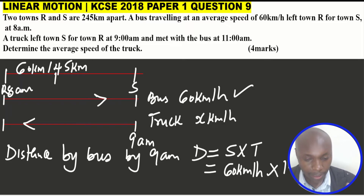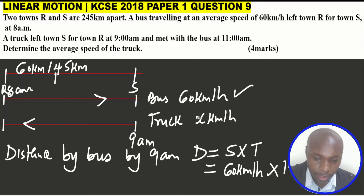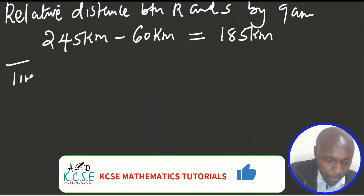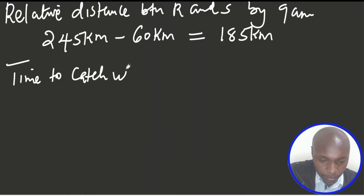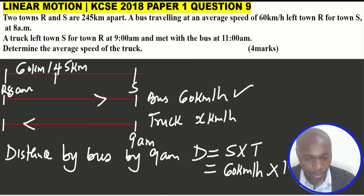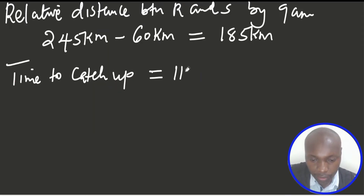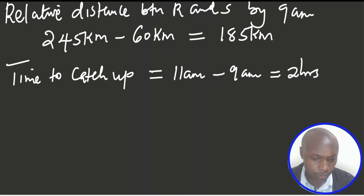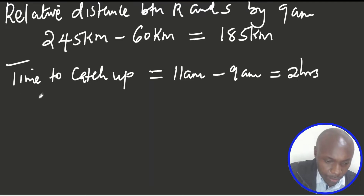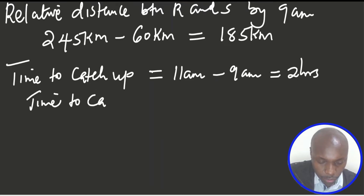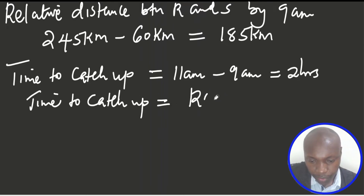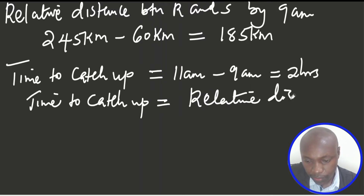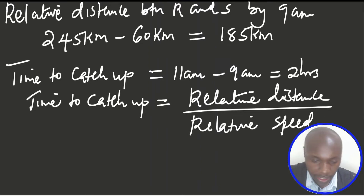That 185 kilometers is the distance between the bus and the truck at 9 a.m. The time to catch up — from 9 a.m. to the meeting time of 11 a.m. — is 2 hours. Time to catch up is calculated by dividing the relative distance by the relative speed. Since the bodies are moving in opposite directions, we add their speeds to get the relative speed: 60 plus X.